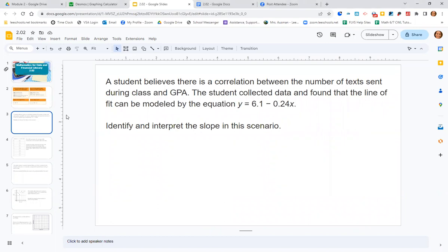So a student believes that there's a correlation between the number of texts sent during class and GPA. The student collected data and found that the line of fit can be modeled by the equation y equals 6.1 minus 0.24x. Identify and interpret the slope in this scenario. So this is a little tricky because they flip-flopped our equation. y equals mx plus b is the slope intercept form, but they've put the slope second. But that's okay. We know that the coefficient, the number in front of the x, is our slope. So we can say that for every text sent in class, the GPA goes down 0.24 points. It's decreasing the GPA by 0.24 points for each text sent in class.